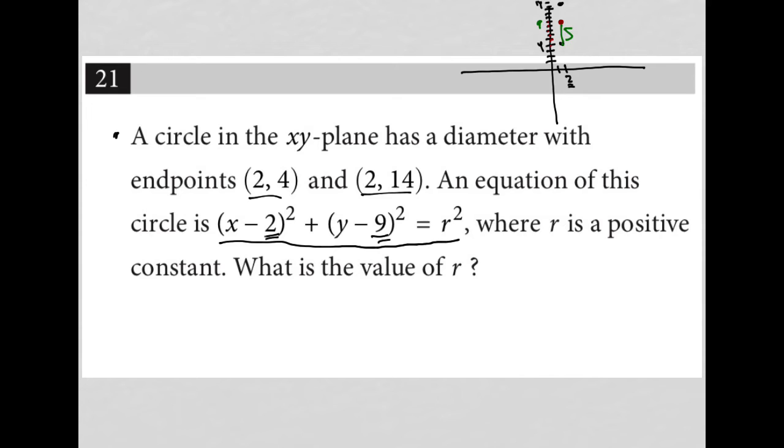The question asks where r is a positive constant and then says, what is the value of r? Well, there it is, it's 5. And I am actually happy that I drew this out because it made it simple to find that 5 as the radius.